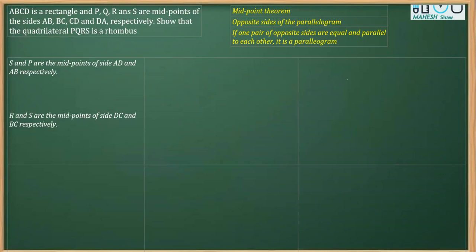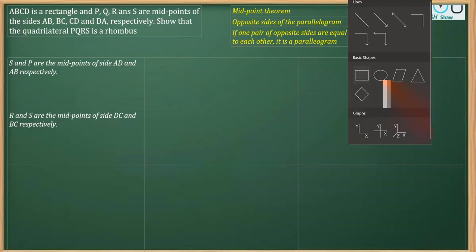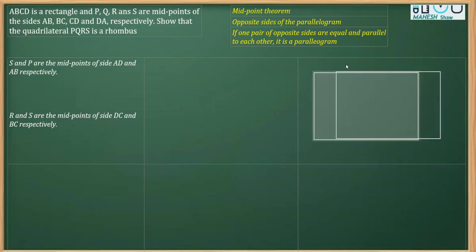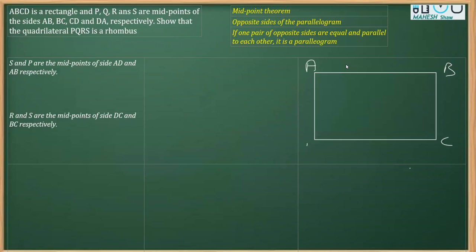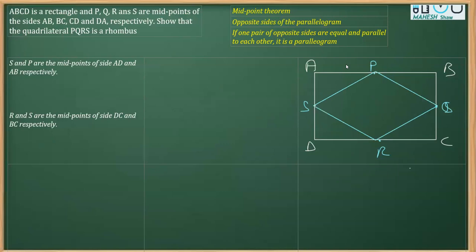The question says ABCD is a rectangle. I've drawn a rectangle and named it ABCD. We need to join the midpoints of these sides: P is the midpoint of AB, Q is the midpoint of BC, R is the midpoint of DC, and S is the midpoint of AD. We join P with Q, Q with R, R with S, and S with P. We need to prove that figure PQRS is a rhombus.